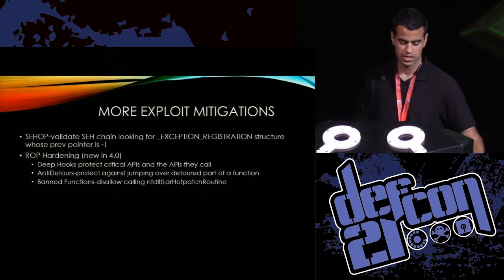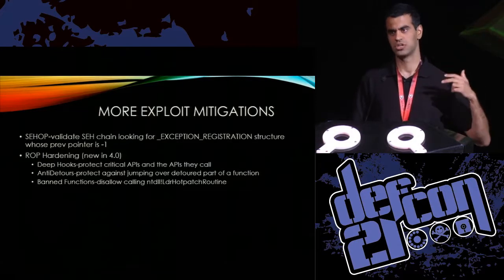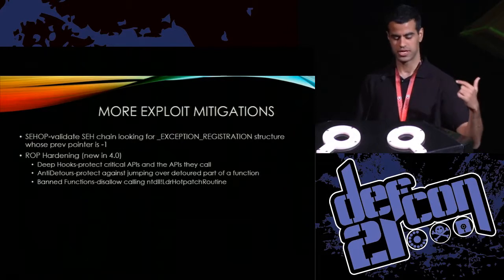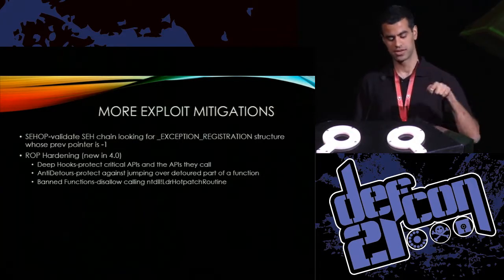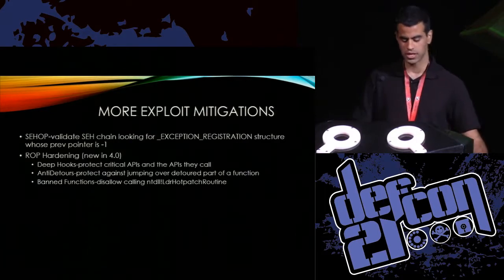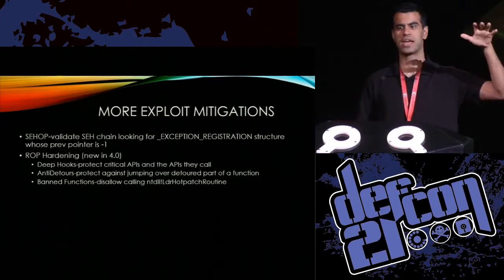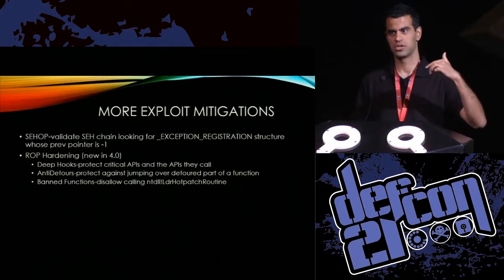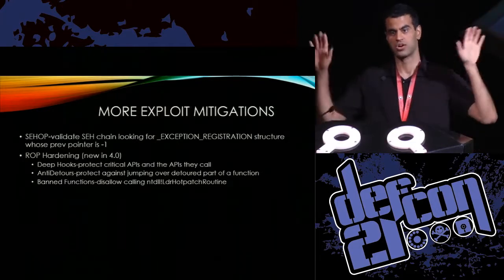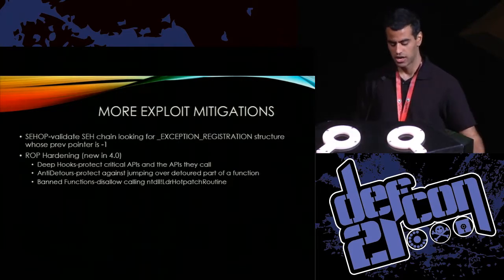More memory corruption mitigations include SEHOP — Structured Exception Handler Overwrite Protection — where we traverse the exception registration structure chain looking for one whose previous pointer is negative one, because that's what we expect. If we don't see that, we know something has been corrupted. Finally, our ROP mitigation, new in EMET 4.0, includes hardenings like deep hooks — protecting things like VirtualProtect and VirtualProtectEx — anti-detours to prevent an attacker from jumping over the hook, and banned functions, specifically disallowing calling NTDLL's LdrHotPatchRoutine, thanks to Yang Yu of NSFocus from CanSecWest this year.